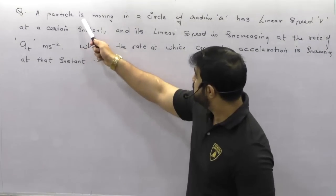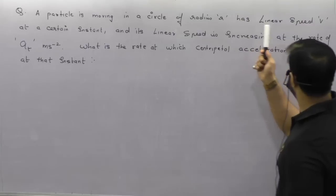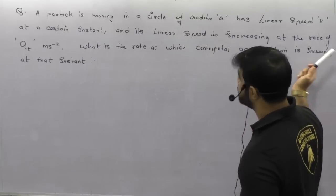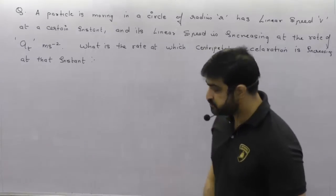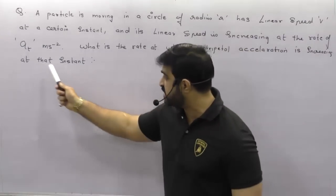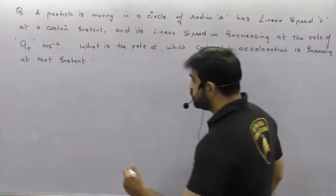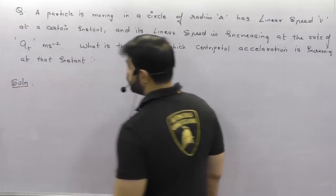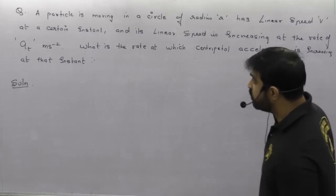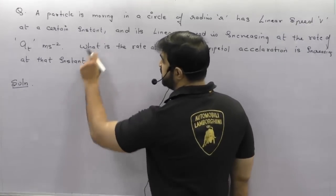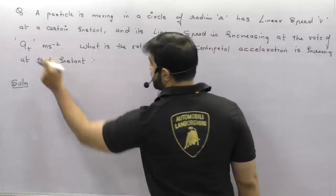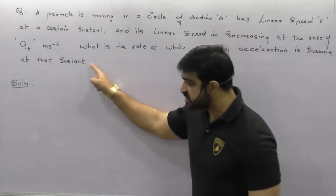Next question: a particle is moving in a circle of radius R with linear speed V at a certain instant, and its linear speed is increasing at the rate of 80 m/s² — meaning it has tangential acceleration. What is the rate at which centripetal acceleration is increasing at that instant?